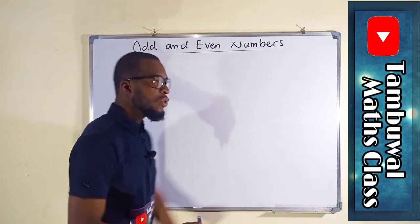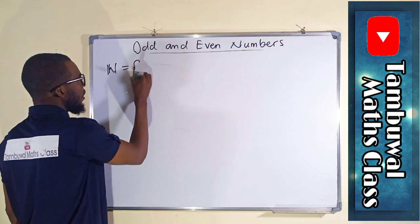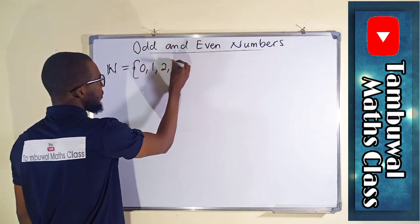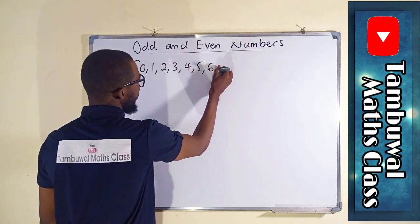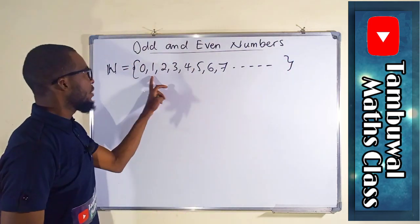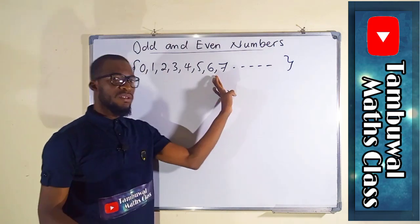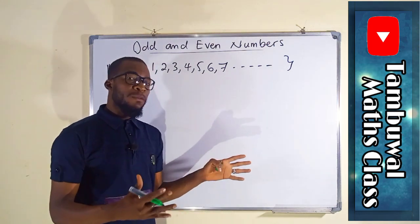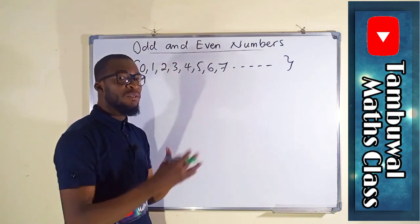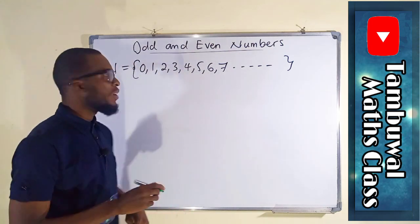Let us first of all consider the whole numbers. The set of whole numbers are numbers that start from 0, 1, 2, 3, 4, 5, 6, 7 in that order. They are natural numbers together with 0, or we say they are the positive integers. From definition, odd numbers are the set of numbers that are not divisible by 2.